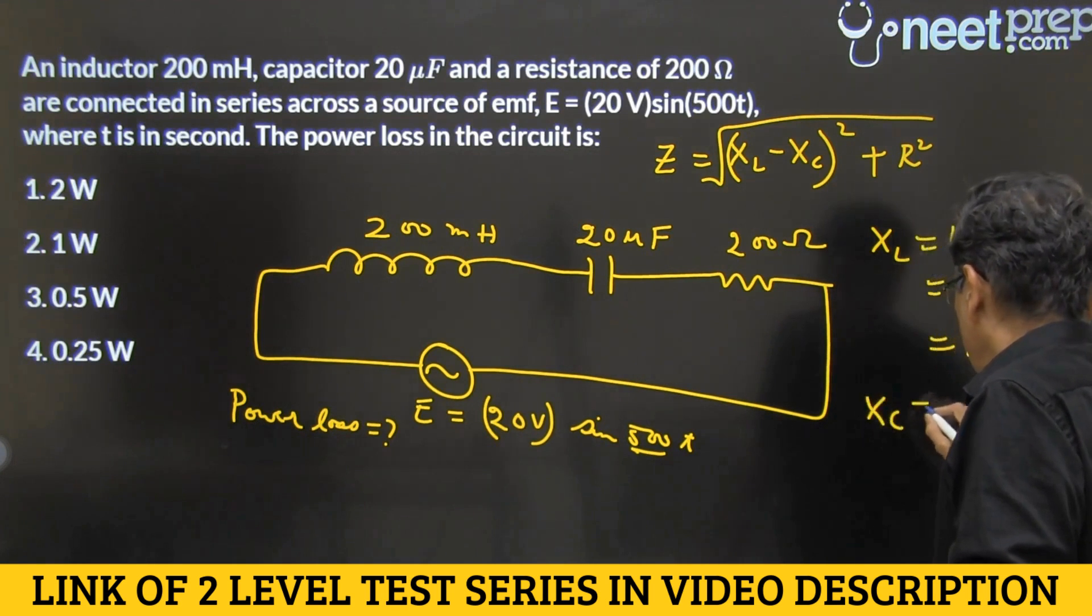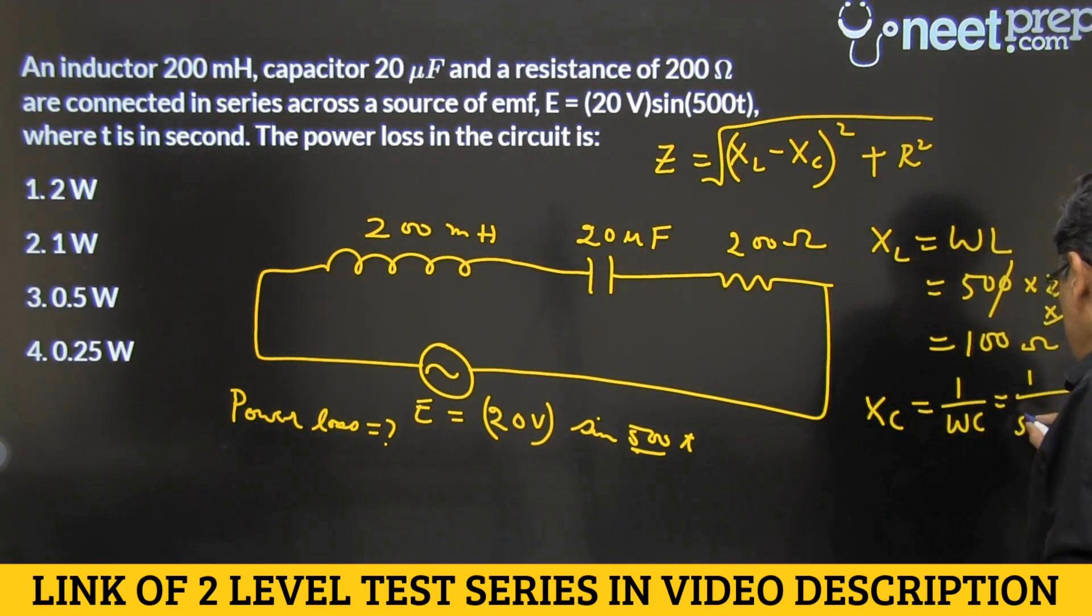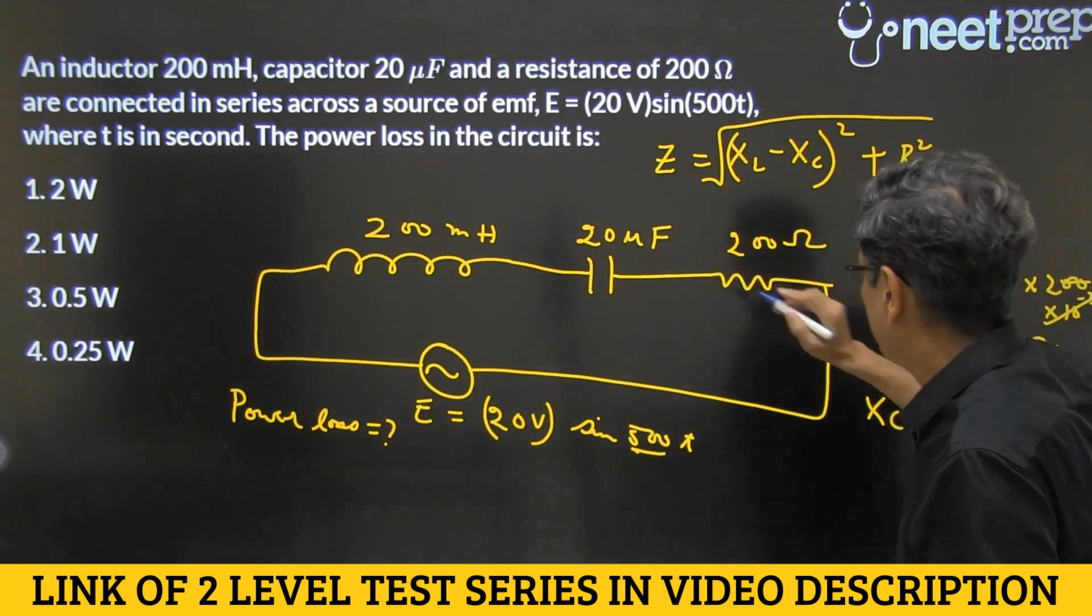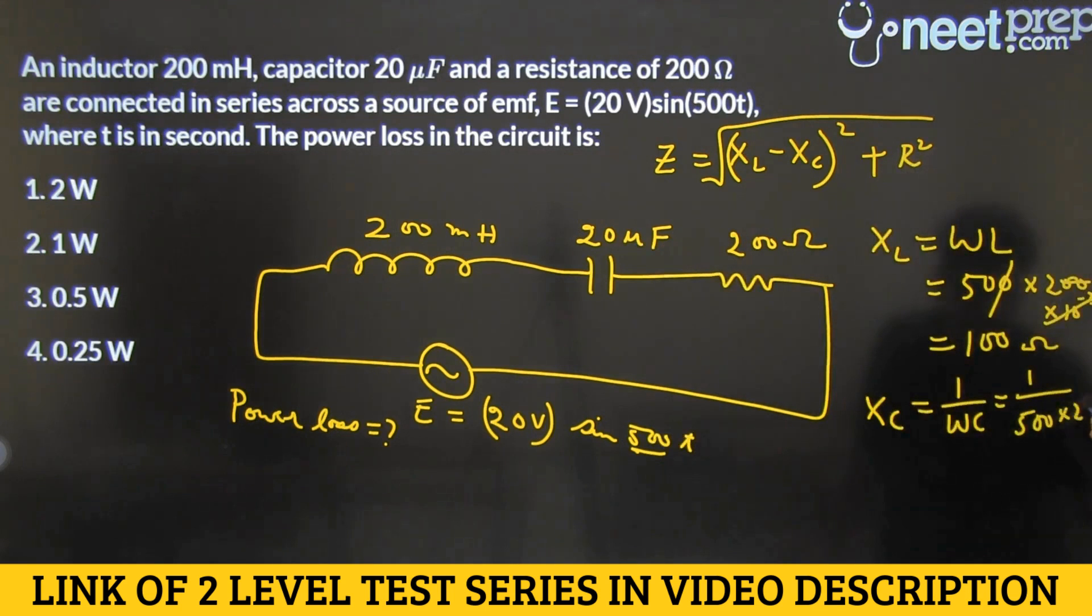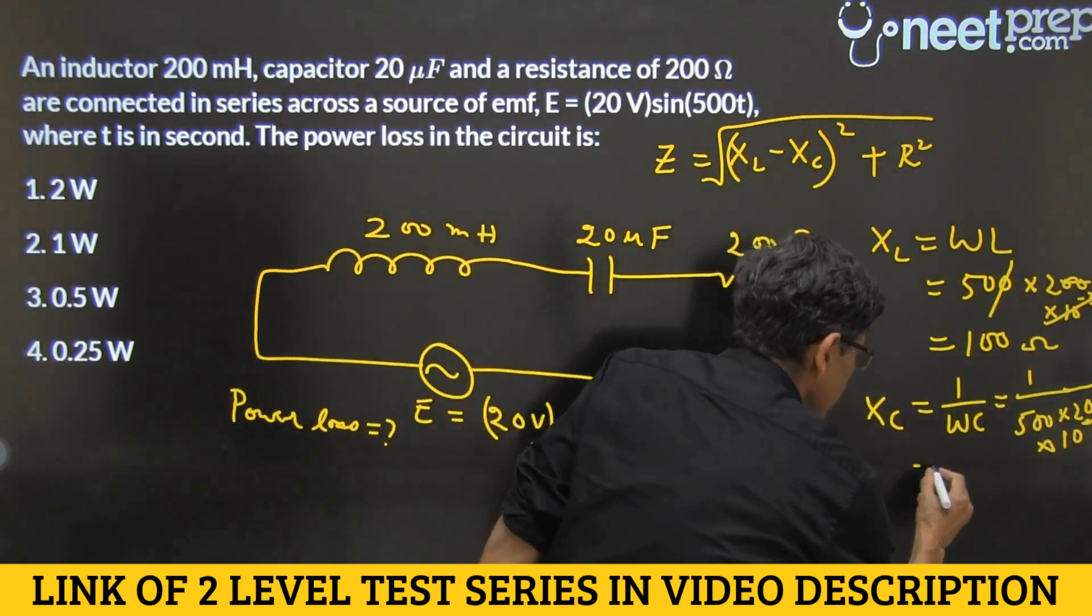Next comes the turn for XC, which as you know is given by the calculation 1 upon omega C. Substitute the values, so 1 upon omega was like earlier 500, and from here, and C, C is 20 microfarad, so 20 and micro means another in the denominator only 10 to the power minus 6. Alright, so what does it calculate to, this 500 into 20 is 10,000, that is 10 to the power 3, and this is 10 to the power minus 6, so when it flips to top, it is coming out to be, sorry, 10,000 is 10 to the power 4, and this is 10 to the power minus 6, so in the denominator, we are left with 10 to the power minus 2, flips to the top as 10 to the power 2. So, this is also 100 ohms,